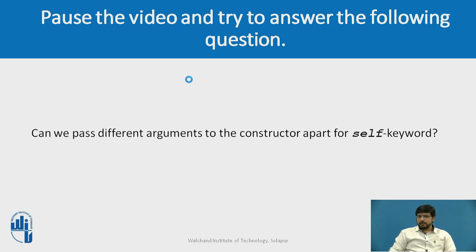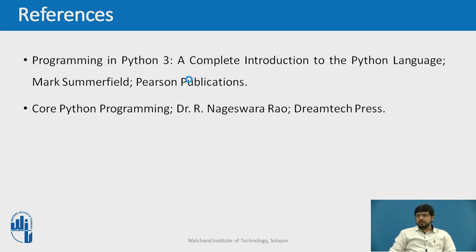To answer the question: can we pass different arguments to a constructor apart from self? Yes, we can pass different arguments, given that self should always be the first parameter of the constructor. References for this video include Programming in Python 3 and Core Python Programming by PSN Publication and Dreamtech Press respectively.